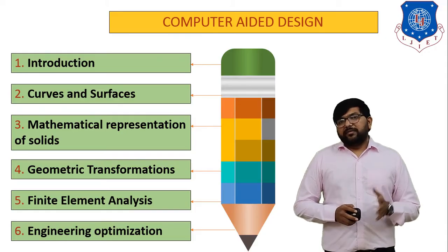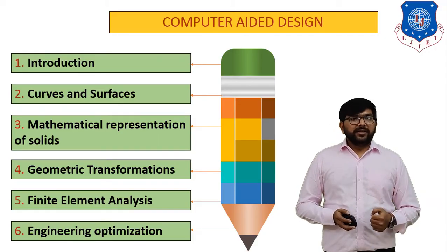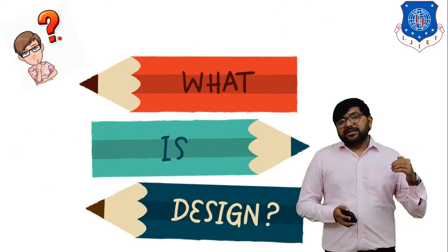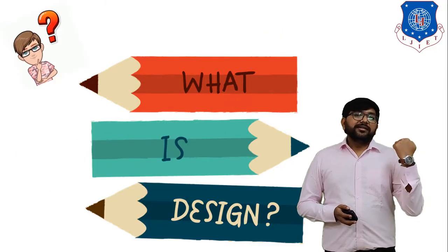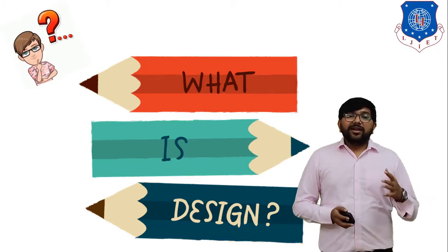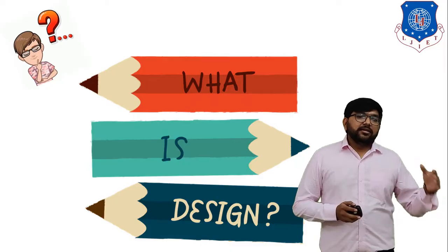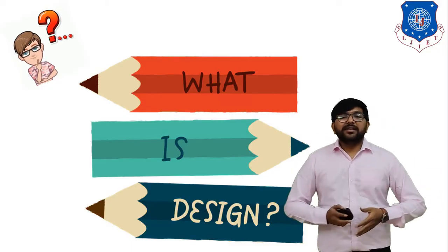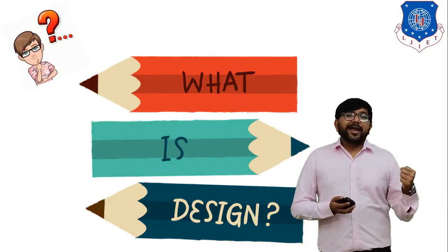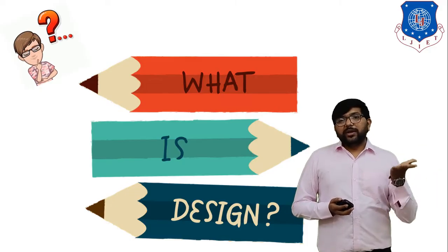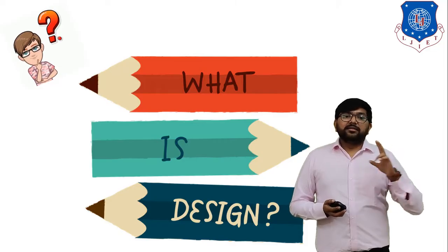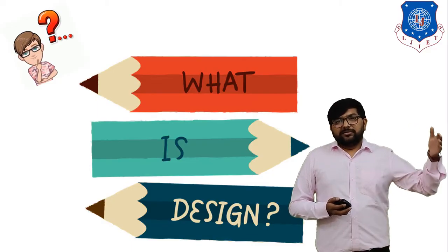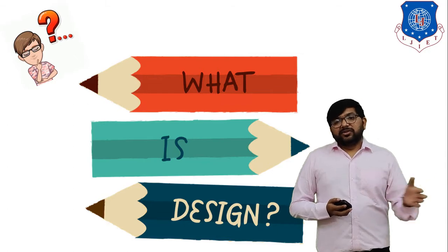Chapter six, engineering optimization, means we have to optimize any problem and find the solution using optimization methods. So this subject covers these six chapters. Before starting, the first question coming to mind is: what is design? As a mechanical engineer, the definition of design is different compared to other students. Design means you have to modify an existing system or create a new design — either make your own design or make changes to an existing one.